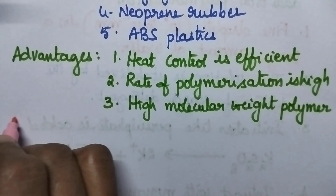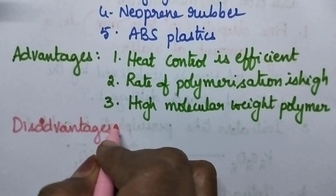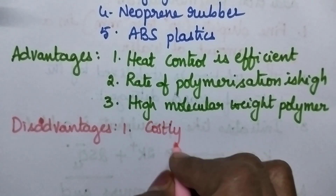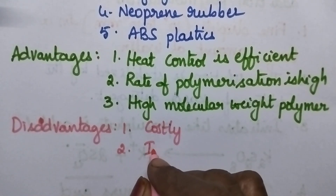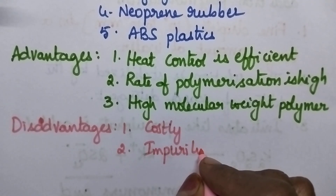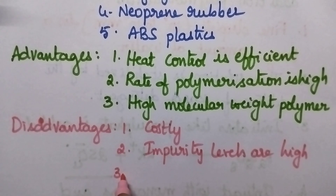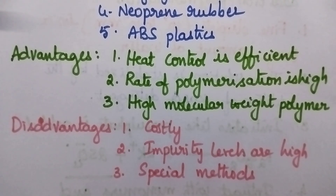Coming to the disadvantages: emulsion polymerization is costly, and the polymer obtained is impure — meaning impurity levels are high. If we want to separate the impurities from the polymer, we have to adopt some special methods. These are the few disadvantages associated with emulsion polymerization.